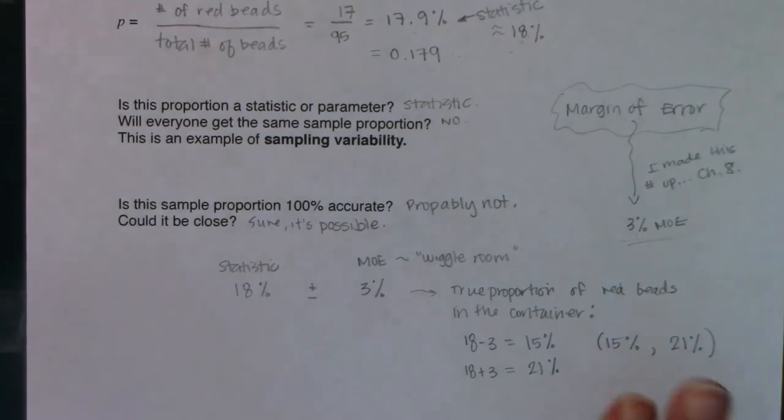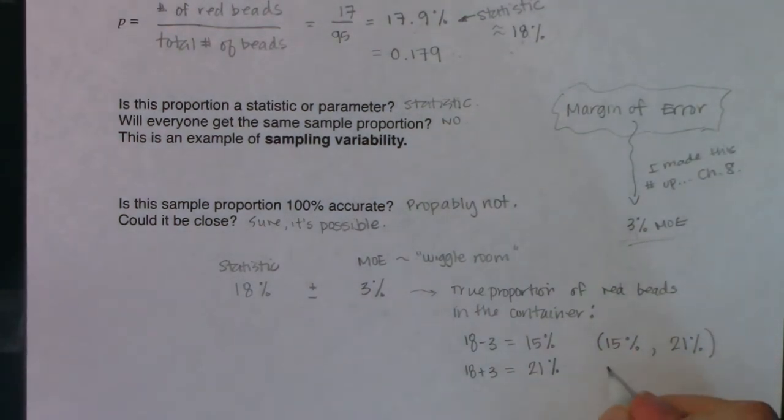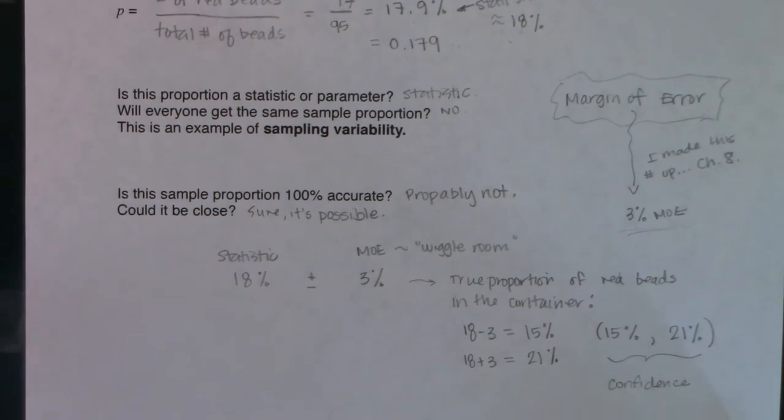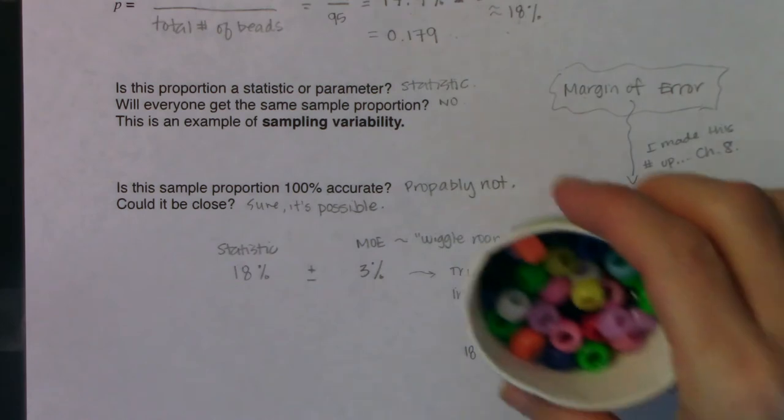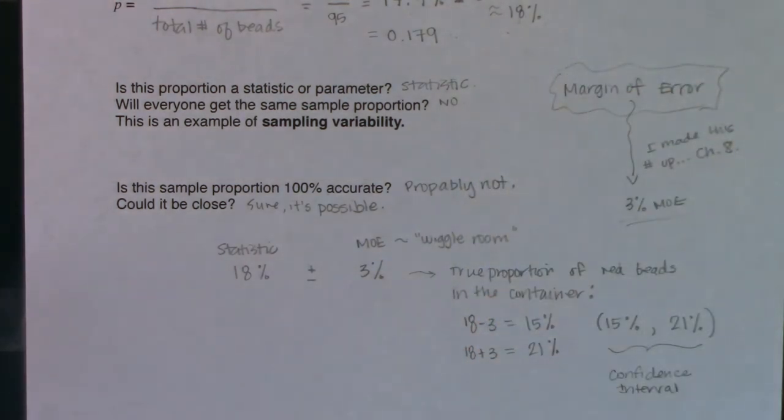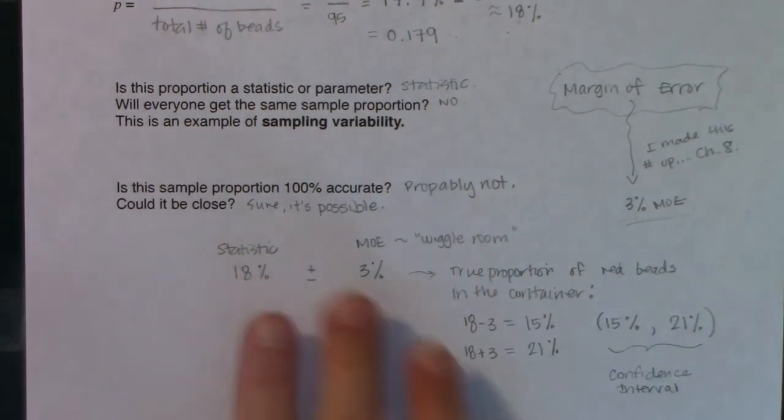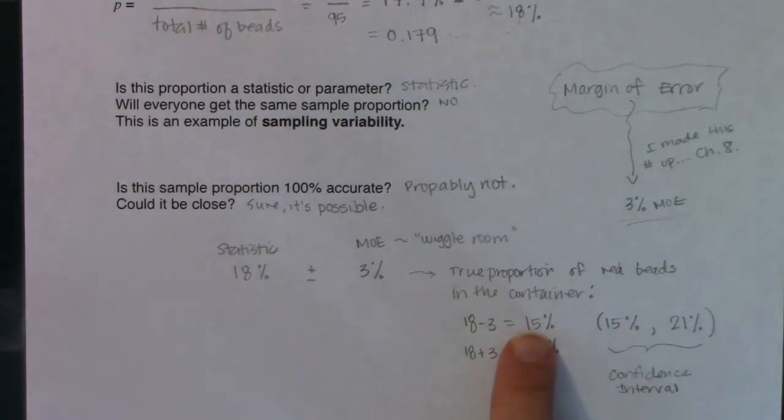And again, this is all coming in chapter eight. But I just want you to hear these ideas. Maybe you'll remember it when we get to chapter eight. You're going to want to keep track of these numbers. We're going to use them again in chapter eight, but that's your first look at a confidence interval. So in stats, we do this all the time. Instead of running the census, we take a sample. From that sample, we get a statistic. We know through sampling variability that this is not likely to be exact and accurate. So we give ourselves a little bit of wiggle room and that wiggle room is called a margin of error. We subtract our margin of error from our statistic, add it to our statistic to get something called a confidence interval.